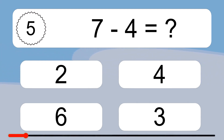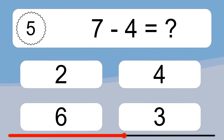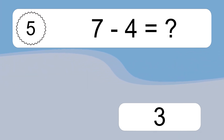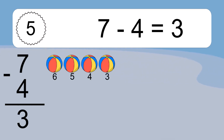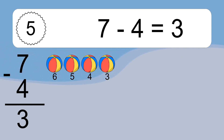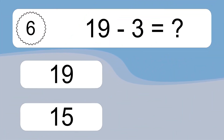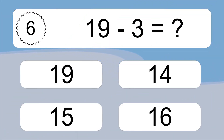20 minus 6. 7 minus 4 equals 3. Let's count it. 6, 5, 4, 3.